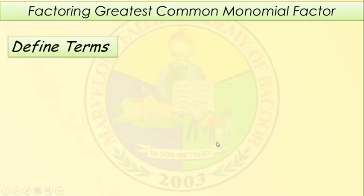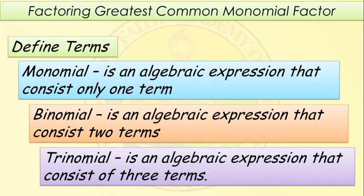First, let's define the following terms. When we say monomial, it's an algebraic expression that consists of only one term. Binomial is an algebraic expression that consists of two terms. Trinomial is an algebraic expression that consists of three terms. These are what we call polynomials — mono means one term, binomial means two terms, and trinomial means three terms.